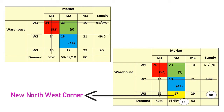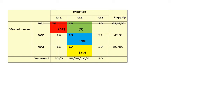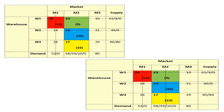We select the next Northwest Corner: cell W3,M2 (value 17), shown in yellow. Supply is 90 units and demand is 10 units. We allocate 10 units to the selected cell. After allocation, demand for column M2 becomes 0 — demand is fulfilled — so we cross out column M2.